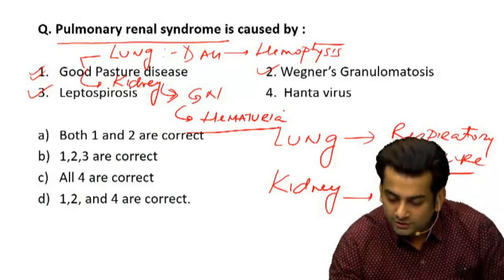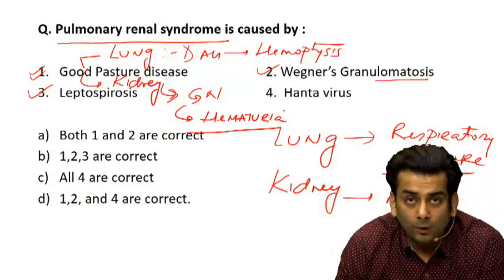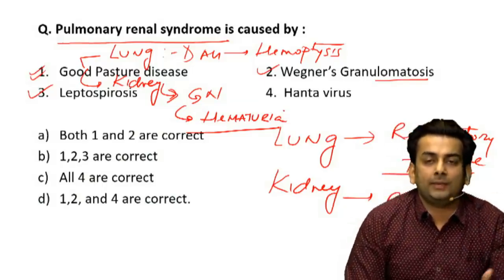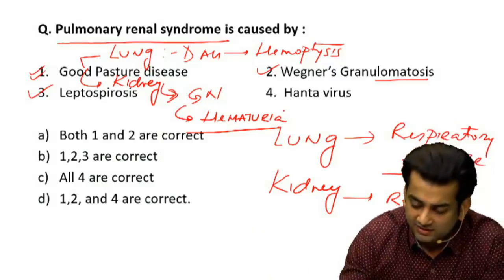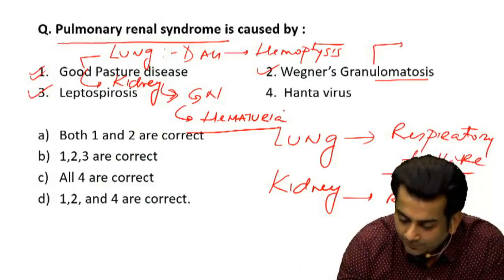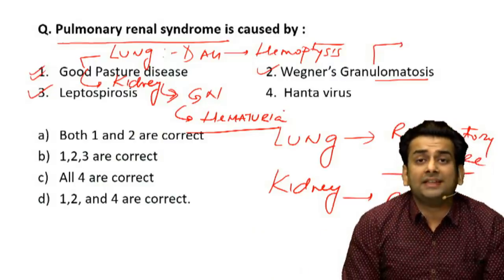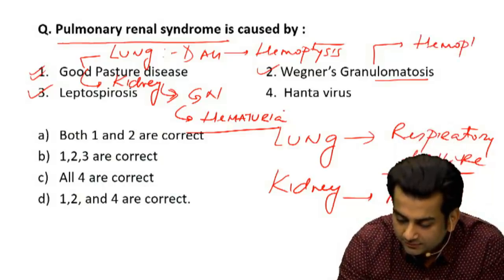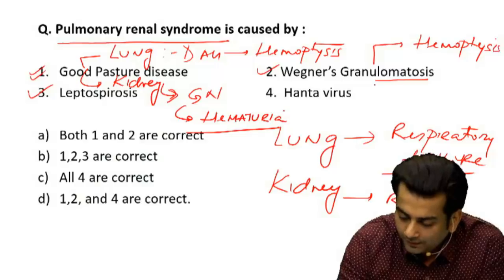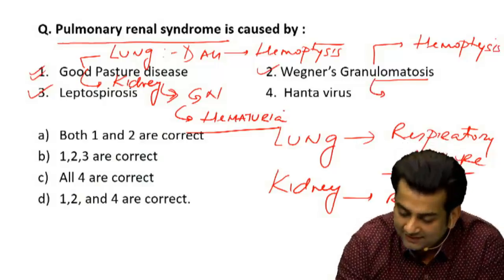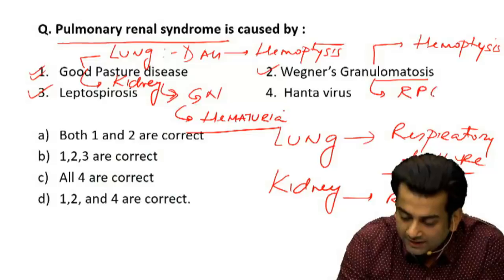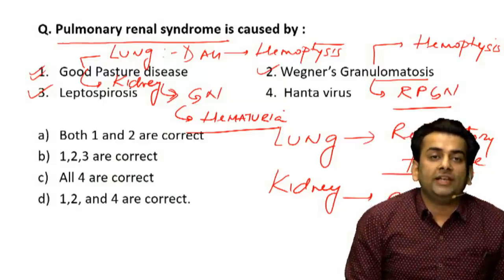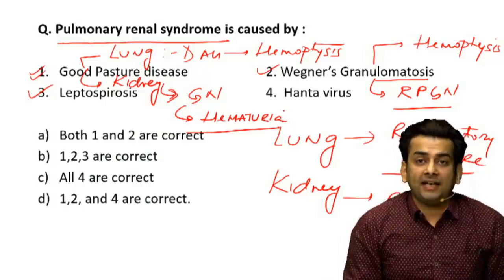Wegener's granulomatosis, which is a c-ANCA positive small vessel vasculitis, apart from affecting the upper respiratory tract and ocular system, does affect the lung and can cause cavitation, manifesting with hemoptysis. It also affects the kidney and may cause a rapidly progressive glomerulonephritis, manifesting with hematuria and a rapid rise in serum creatinine.